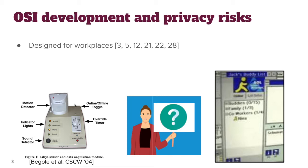In terms of privacy, Nardi et al. in 2000 found that plausible deniability was an important feature of OSIs in the workplace. That is, it was important that people could say something like, 'Oh, that's funny that it said I was online. I stepped away for a while and I just saw your message,' regardless of whether that was true or not.